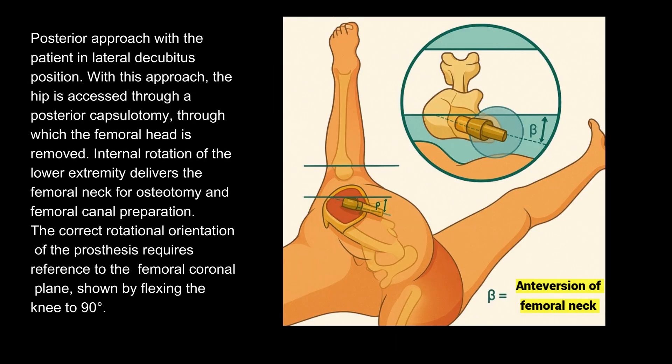Posterior approach with the patient in lateral decubitus position. With this approach, the hip is accessed through a posterior capsulotomy, through which the femoral head is removed. Internal rotation of the lower extremity delivers the femoral neck for osteotomy and femoral canal preparation.